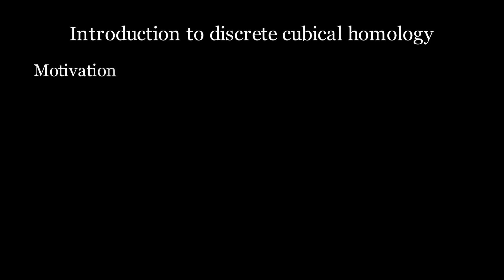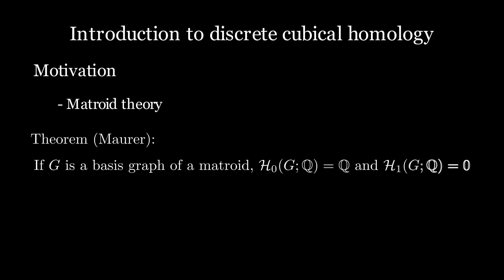Even though discrete cubical homology is a relatively new area of study, it has already found several applications. These include applications to things like matroid theory, where there's this theorem of Morer that says if g is a basis graph of a matroid, its zeroth homology group over q is q, and its first homology group is trivial.